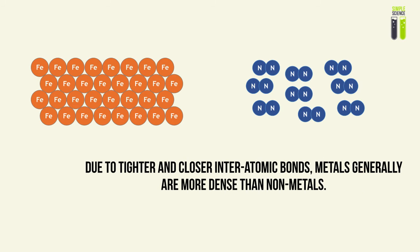Also, these bonds are closer together, so there are more metal ions — metal cations, or metal atoms — in a fixed volume when comparing to non-metals. Therefore, metals are generally more dense.